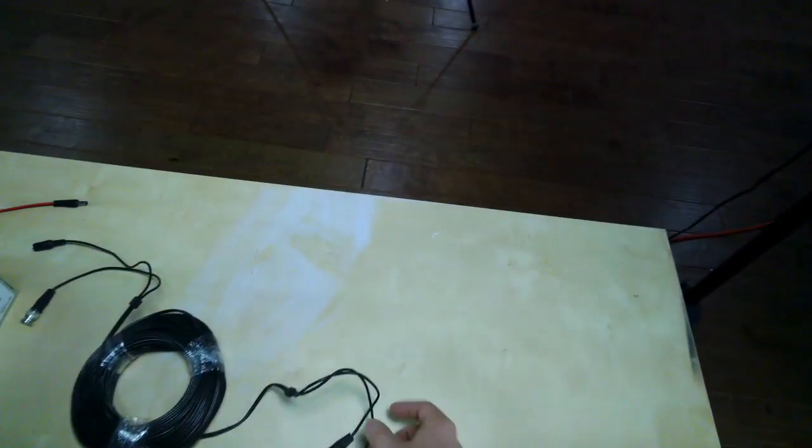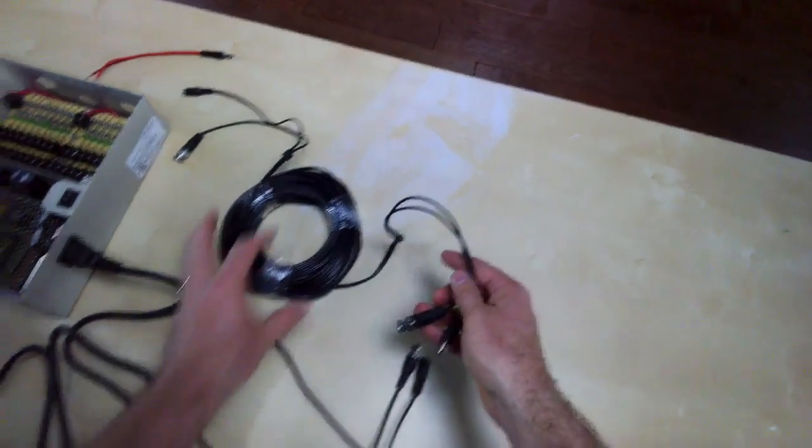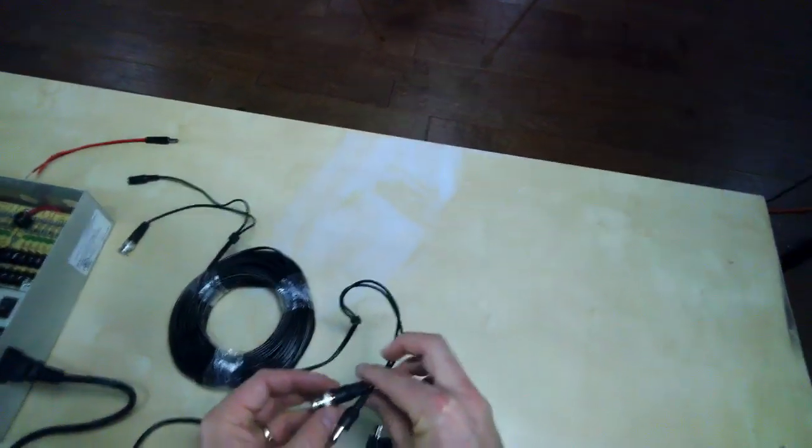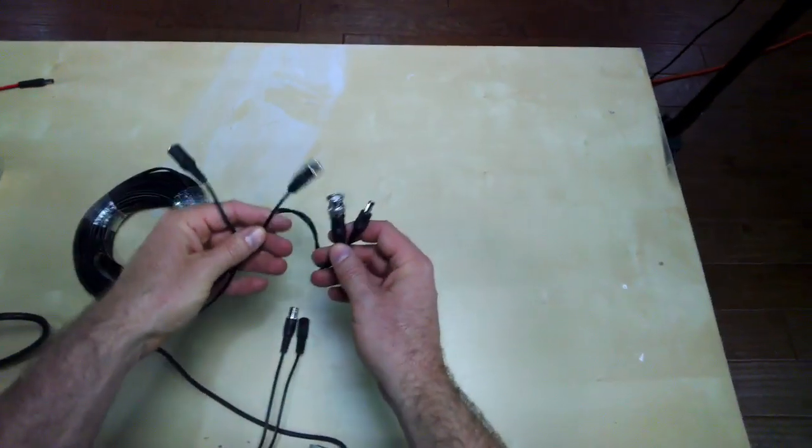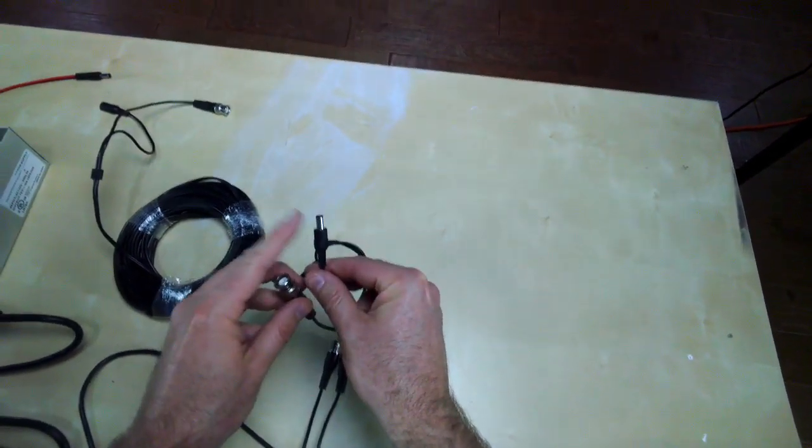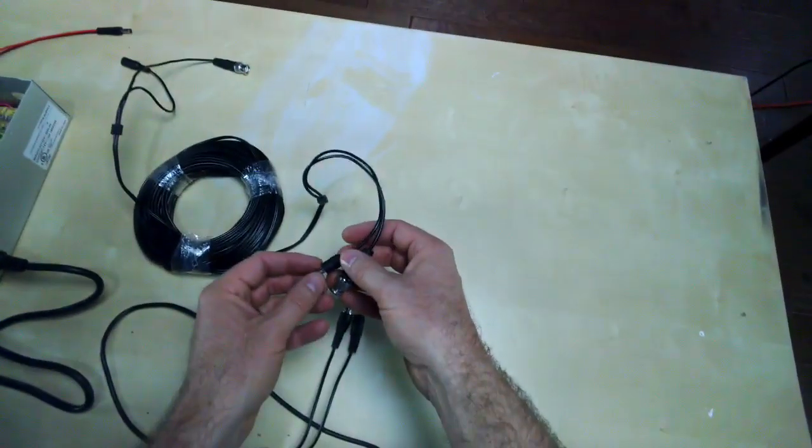So here I have the pre-made Siamese cable. When you're running this cable, just be careful and make sure you run the right ends. You can see they're different. The camera end is going to be the one that has the female power supply, so just be careful when you run cables that you do them correctly.